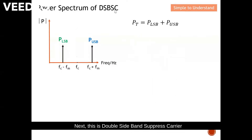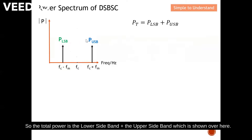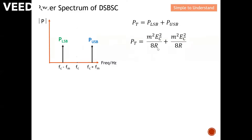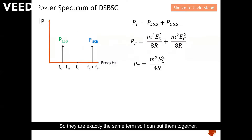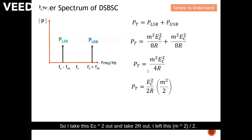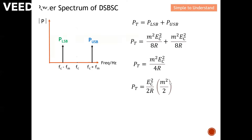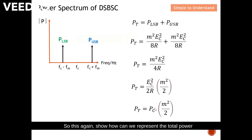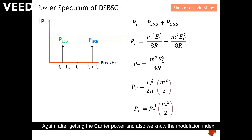For double sideband suppressed carrier, there is no carrier component at all, so the total power is just the lower sideband plus the upper sideband. Combining these two equal terms gives the total power for DSB-SC. Expressing this with respect to carrier power by factoring out Ec² / 2R, we obtain: Pt = Pc × m²/2. Again, knowing the carrier power and modulation index is sufficient to compute the total power.